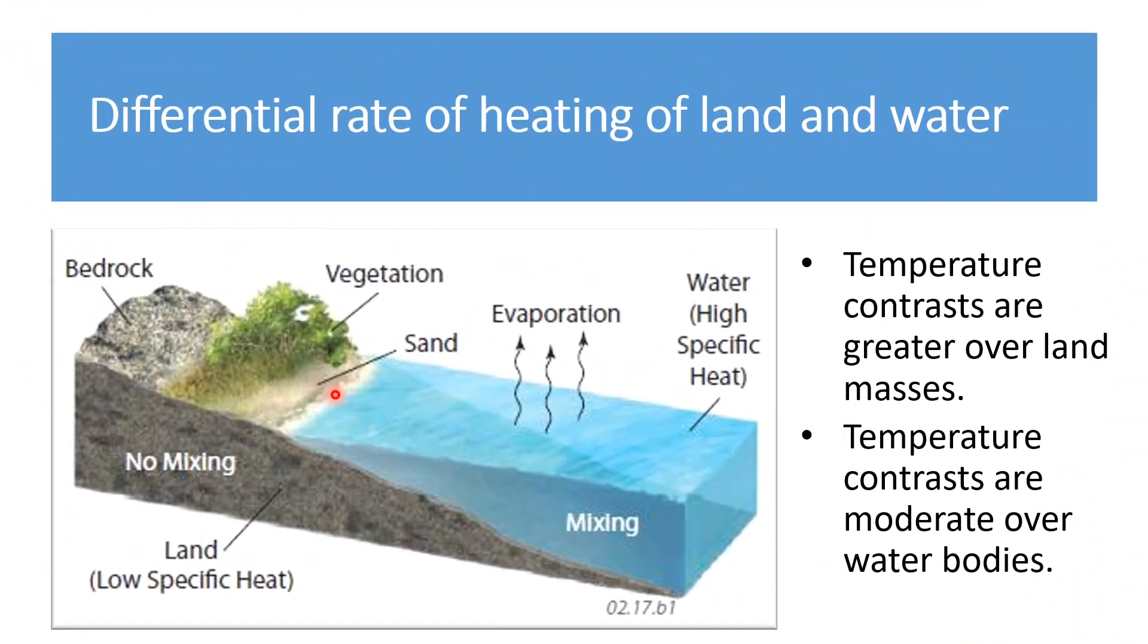Apart from this, we also find that temperature contrasts are greater over the land masses than those of in the water body. This is mainly because on the land masses, we have different types of rocks which get heated by the sun at different temperatures. Besides this, there are mountains, plateaus, bedrocks, vegetation all respond to heat in a different way.